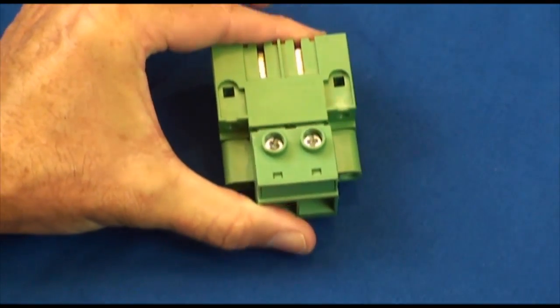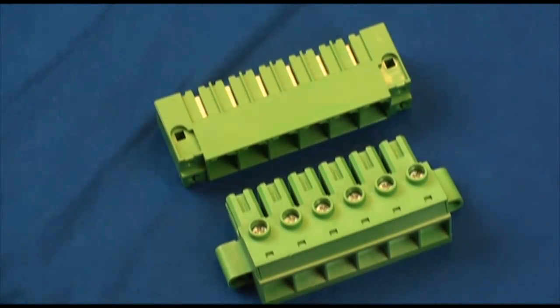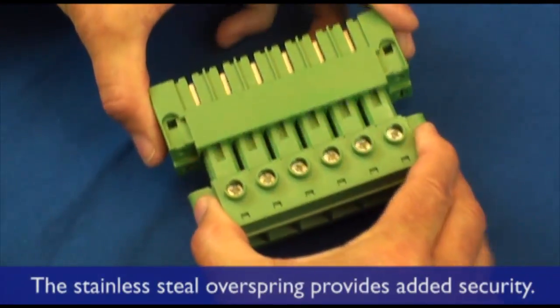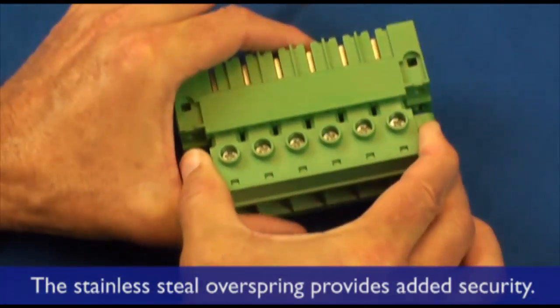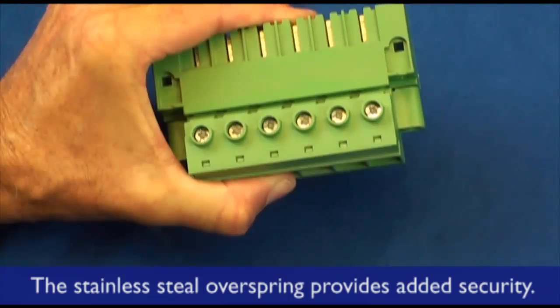The light touch forces will reduce mechanical stresses and possible damage to the printed circuit board solder joints. The stainless steel over spring provides added security on the interface against temperature fluctuations often seen in power connections.